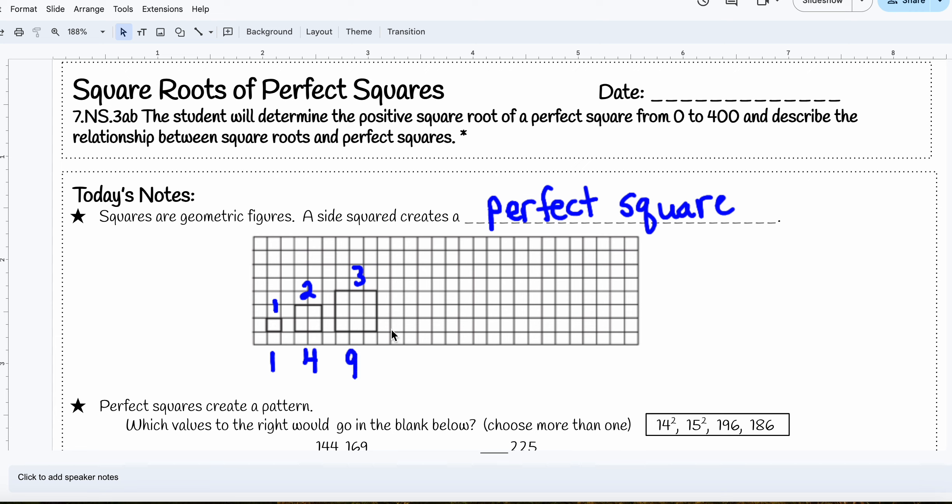So if I wanted to draw one, go ahead and draw one on yours with a length of four. So we're going to label this four, and the area would be 16.